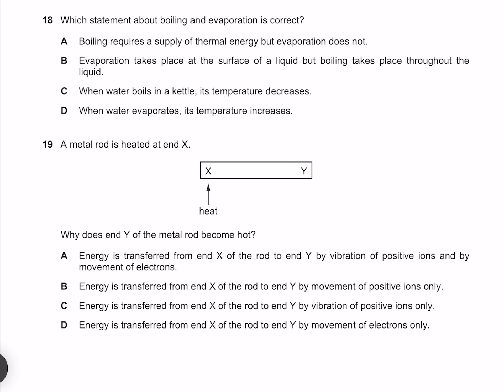Which statement about boiling and evaporation is correct? Boiling requires a supply of thermal energy, but evaporation does not. Both require energy. Evaporation takes place at the surface of a liquid, but boiling takes place throughout the liquid, that is indeed correct. When water boils in a kettle its temperature decreases, it does not. When water evaporates its temperature increases, and it does not. Our answer must be B.